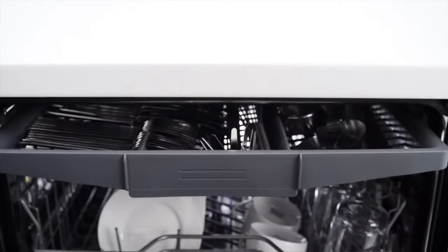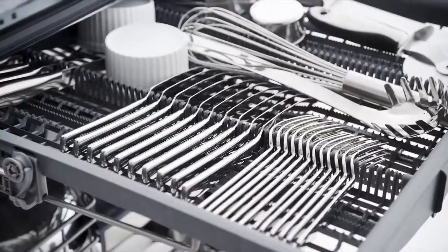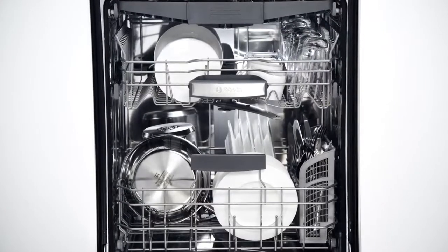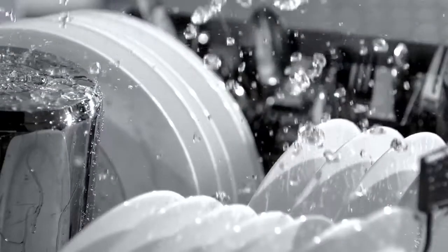The new third rack will change the way people load dishes. It holds cutlery, spatulas, tongs and other utensils and preserves space in the bottom rack to load more place settings.